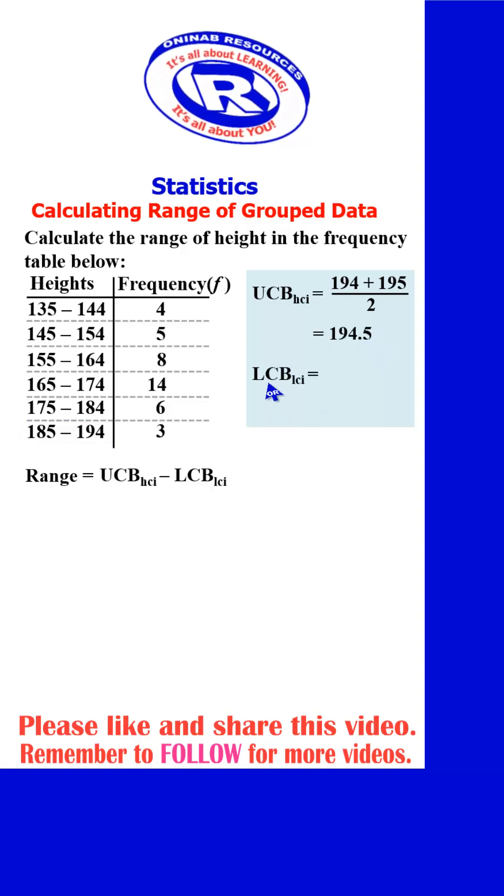We then go to the lower class boundary of the lowest class interval. And the lowest class interval is the first class interval. We consider a class before this. The upper class of that interval will be 194. We consider it with the lower limit here. We find their average. So that we now have it as 135 plus 134 divided by 2. And that will give us 134.5.